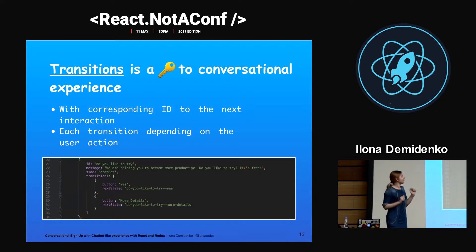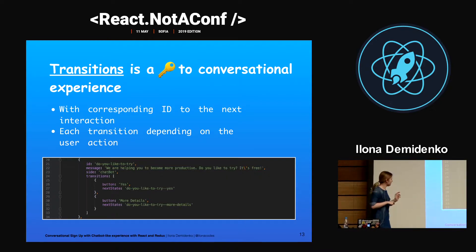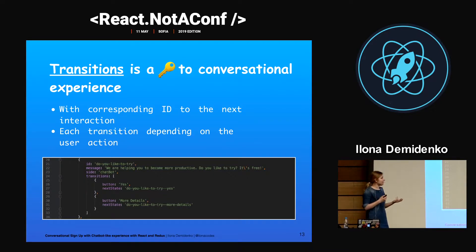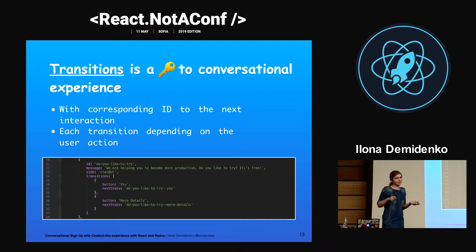Transitions are the key to the conversation experience. Every transition has a next-at field — a reference to the ID of the state that will be active after the transition. Every transition depends on the user action, such as confirming an answer, clicking an answer button, or pressing the enter key.